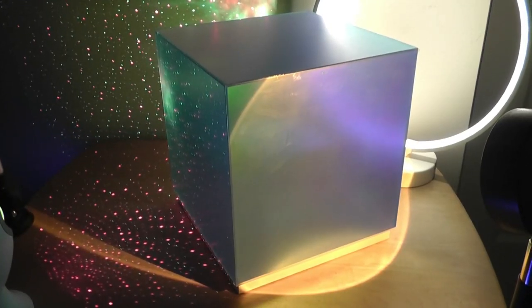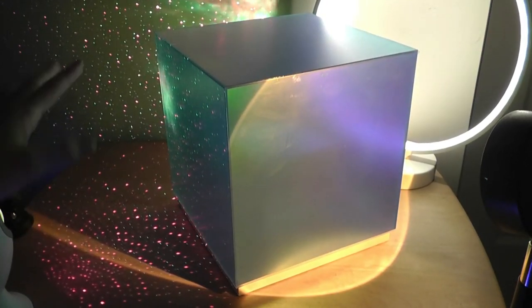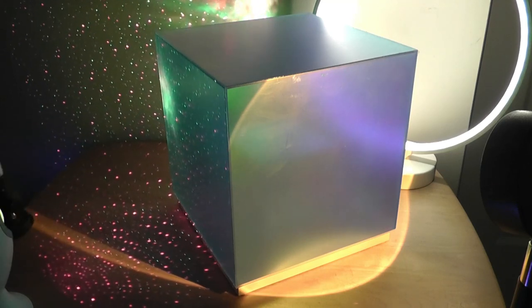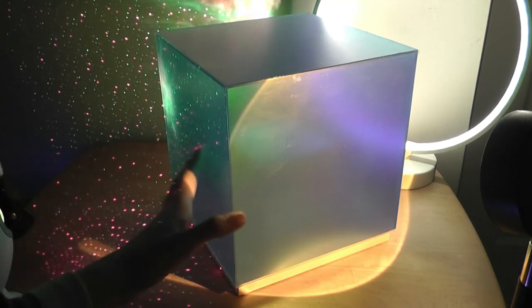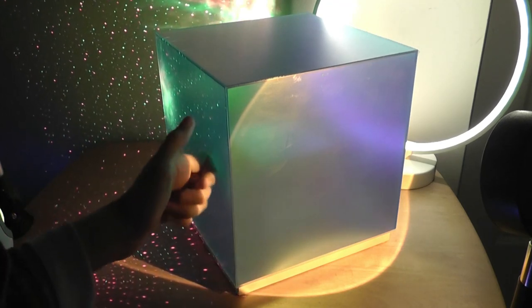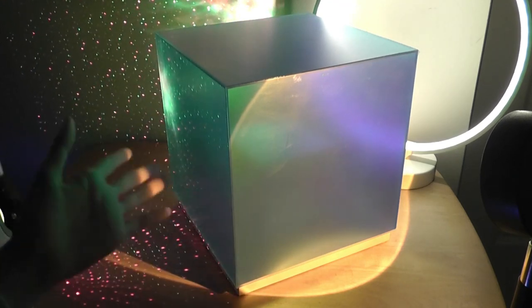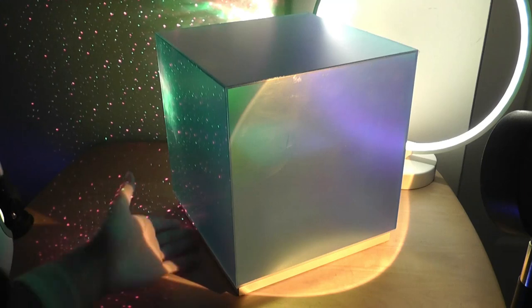Alright, so here it is, the cube. Right now it's turned off, we just have the other lights around it, creating some effects, and overall, as aforementioned, the sides of the cube are made out of this acrylic, plastic material, but it still feels pretty sturdy.